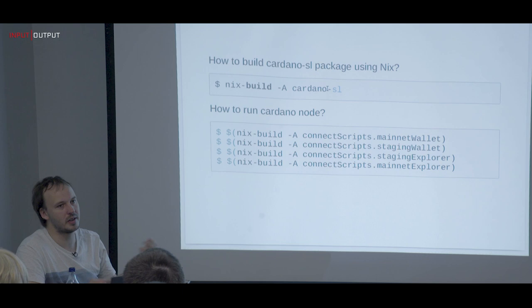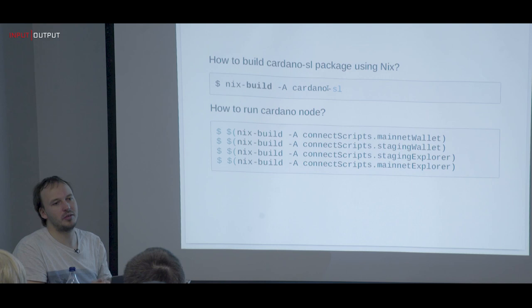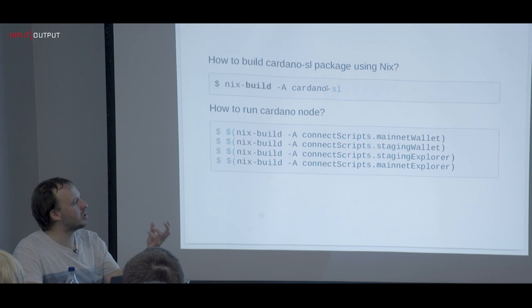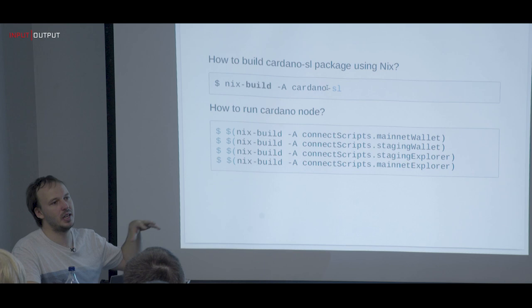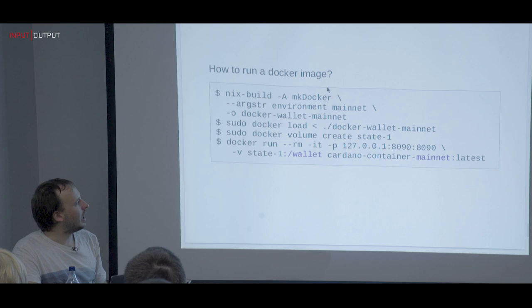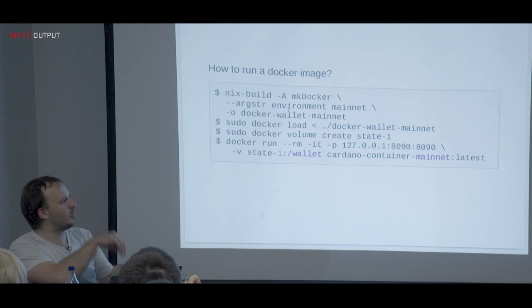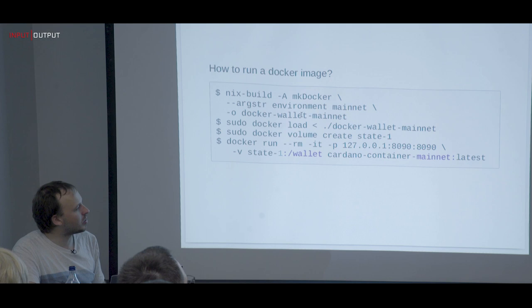There are top-level attributes where you can override things like the topology file for people who want a different one. We can now build different kinds of scripts, and the next step is testing them — taking a virtual machine, running all of those inside, and making sure they work. We also have a Docker function: it provisions Cardano inside Docker using those connect scripts, which is what some of our partners use to build Docker images.